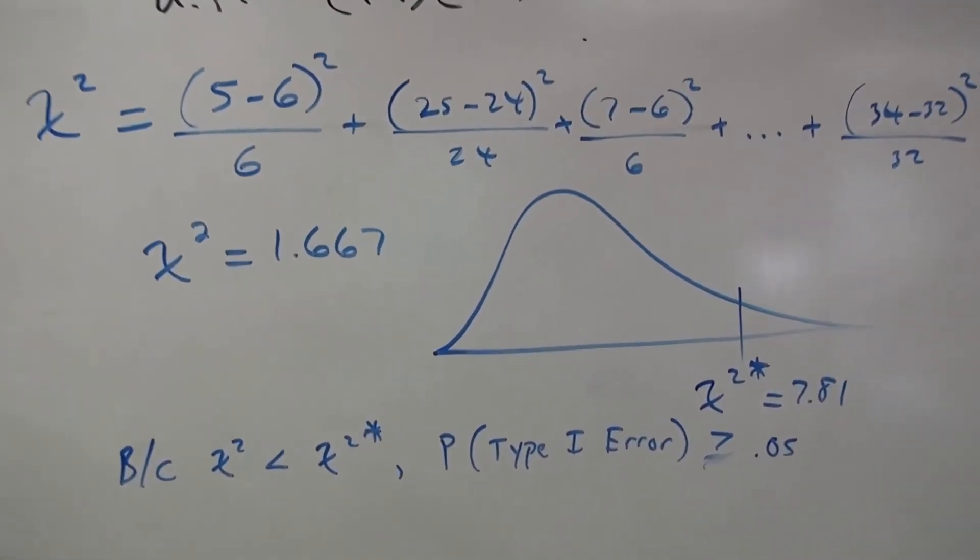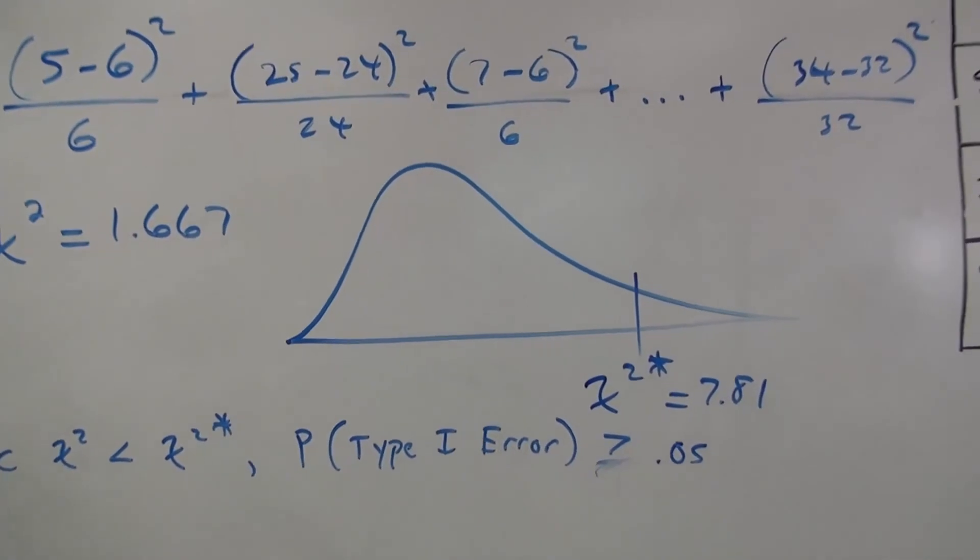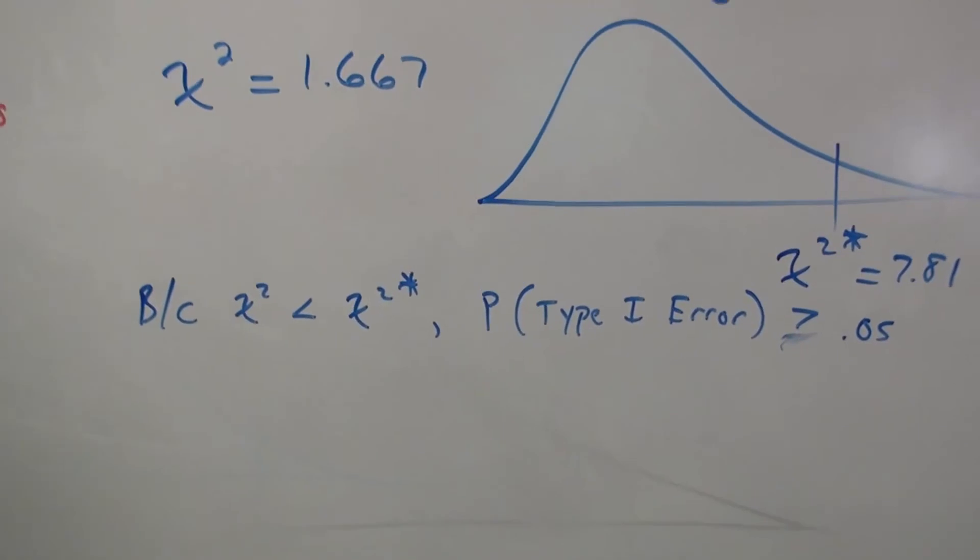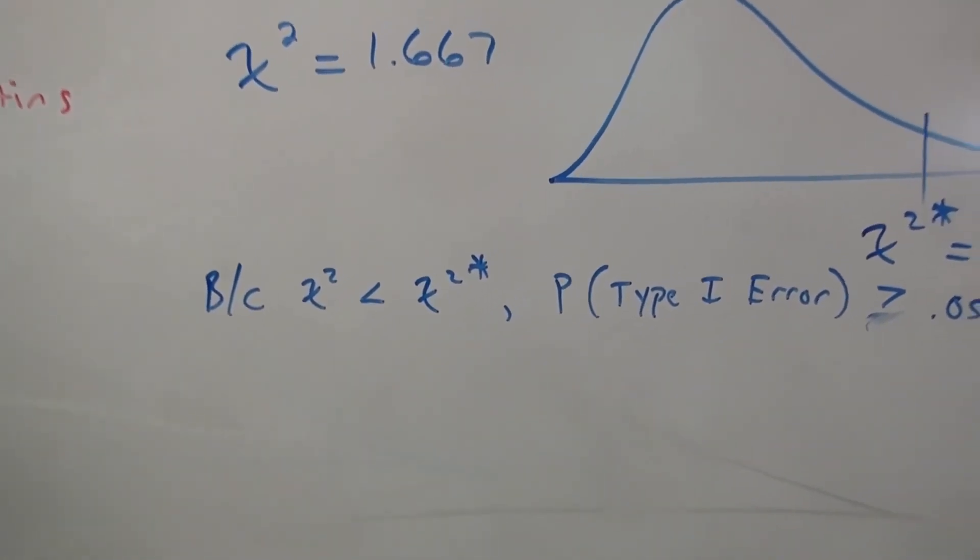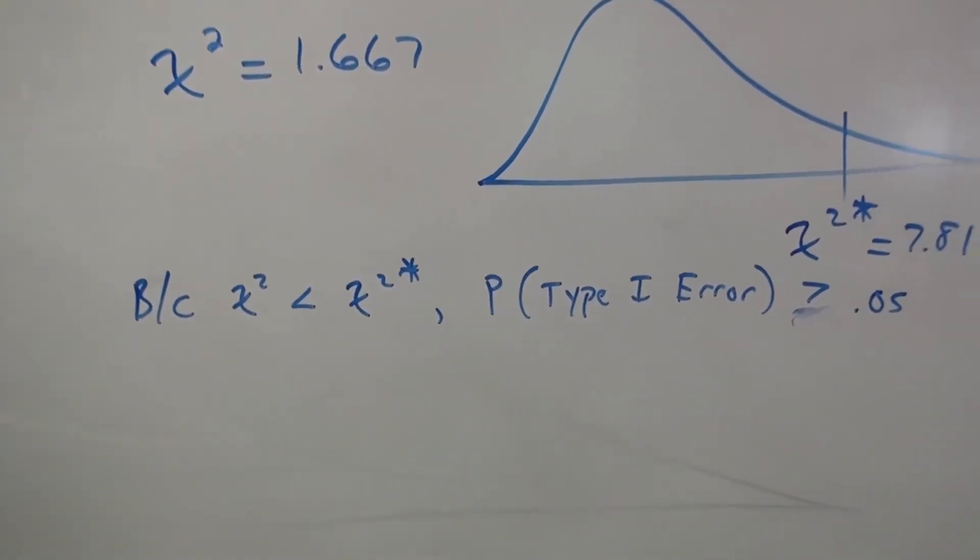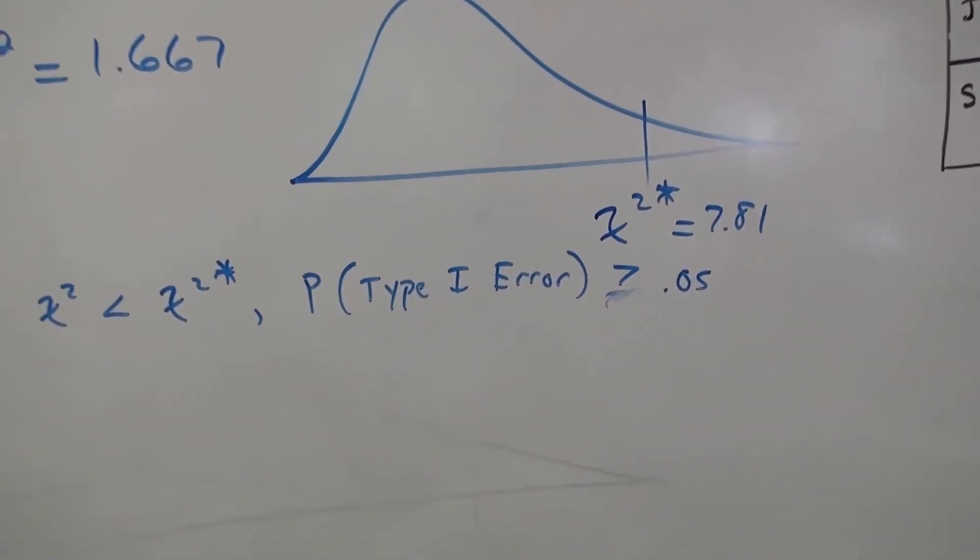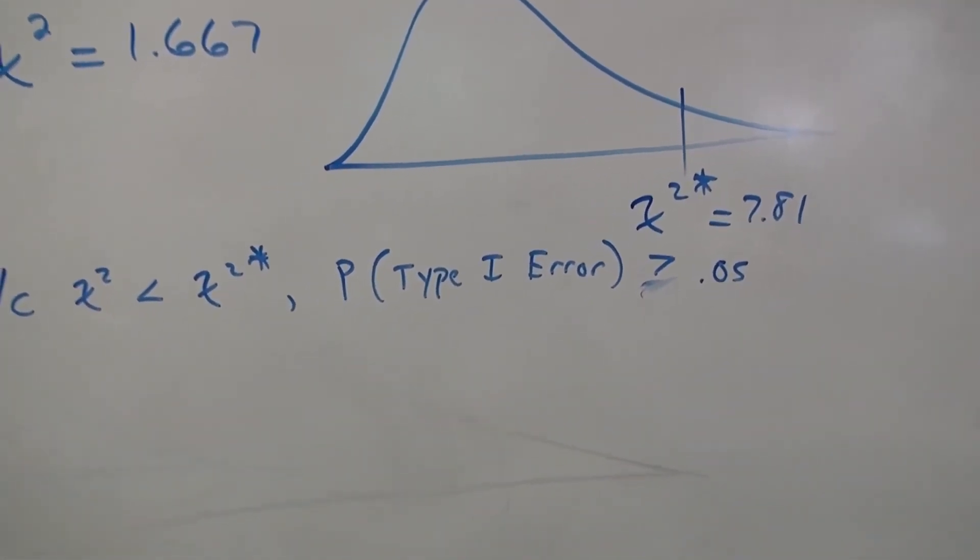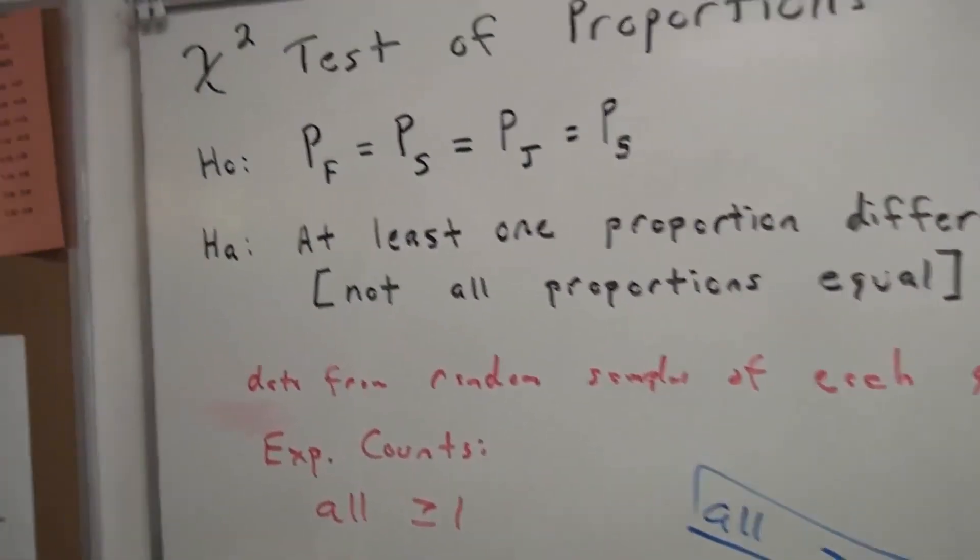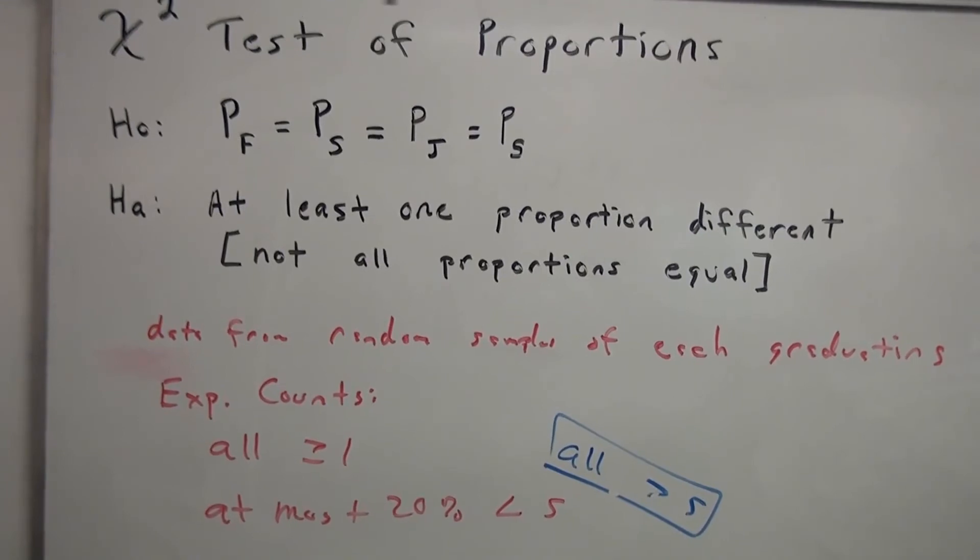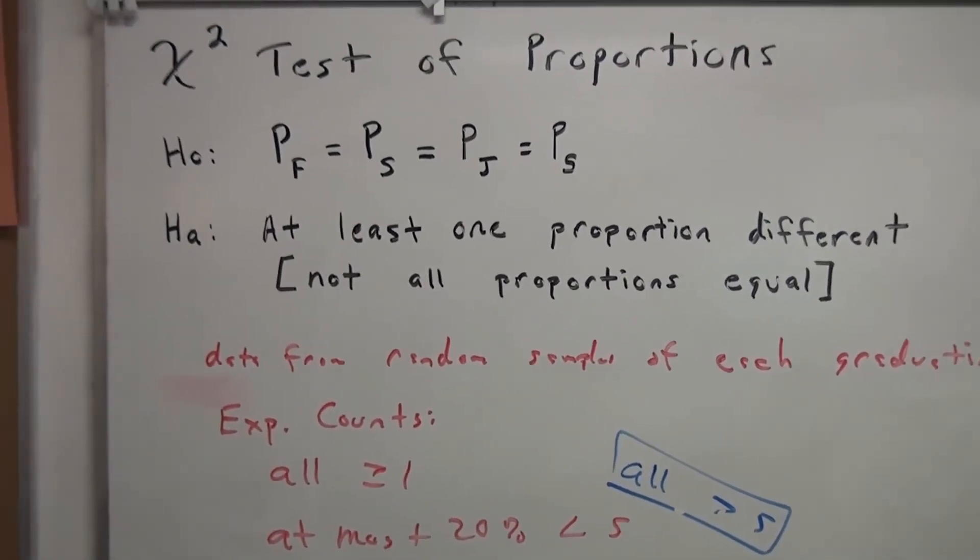We use 3 degrees of freedom to find the critical chi-squared value of 7.81 that traps 5%. Because our test statistic was less than the critical chi-squared statistic, the probability of Type I error is more than 0.05, so we fail to reject the null. The evidence fails to suggest that at least one of the proportions is different.